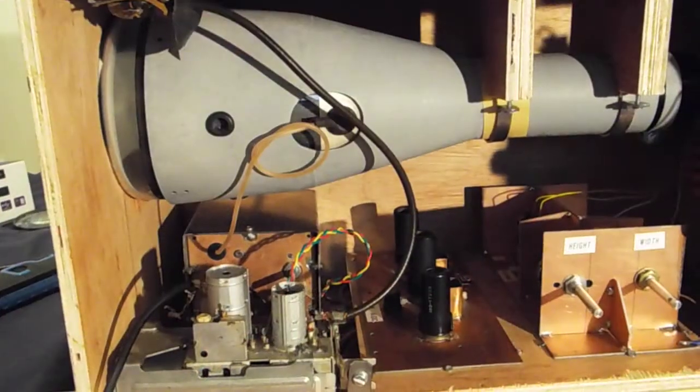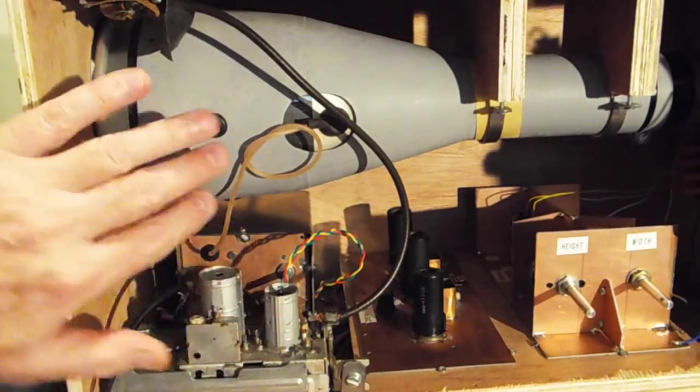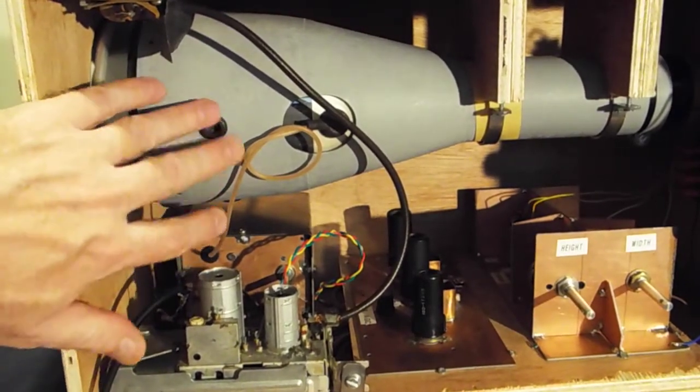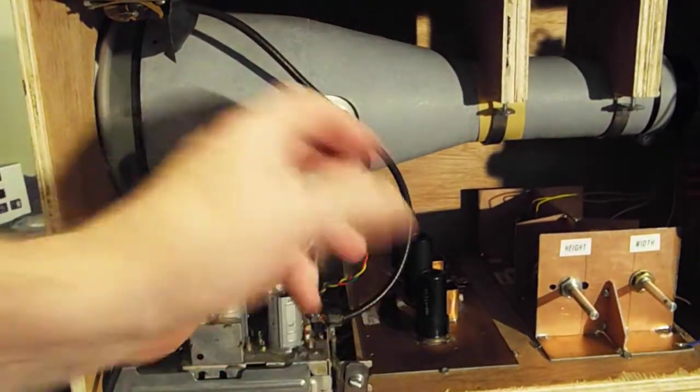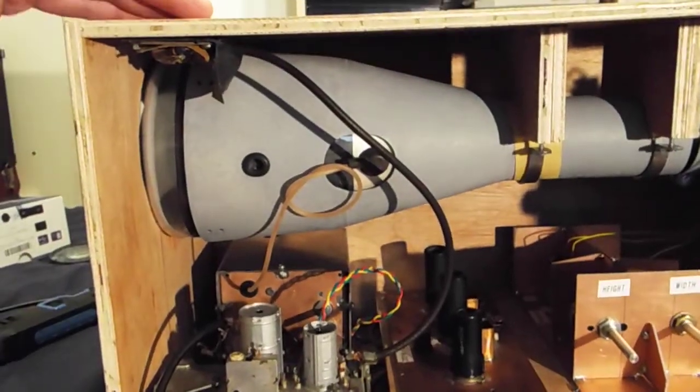Here we have another view of the inside of the TV tuner. This is a five inch green screen 5CP1. Antenna input at the top from a socket just on here.